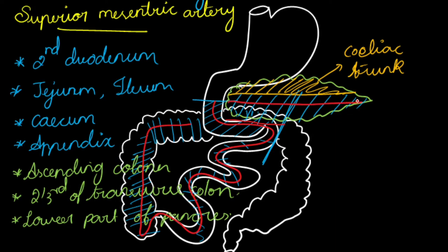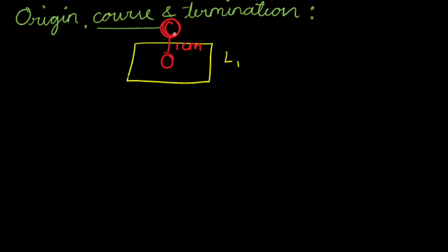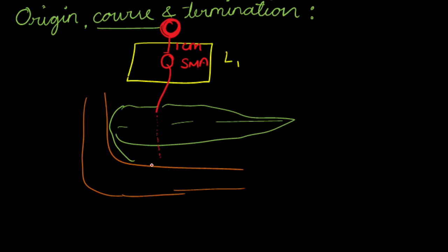Regarding the origin, course, and termination of the superior mesenteric artery: we know it originates from the L1 vertebral level, almost one centimeter below the celiac trunk. From there, the superior mesenteric artery runs behind the body of the pancreas. It then reaches the third part of the duodenum — the second part is here and the third part crosses like this.